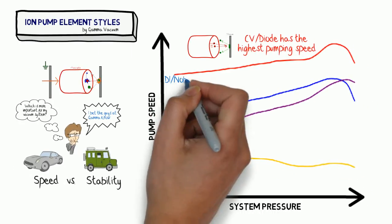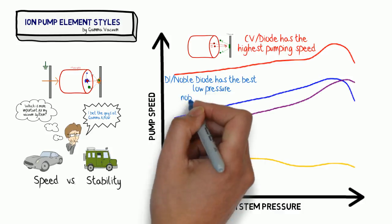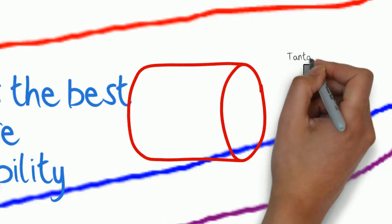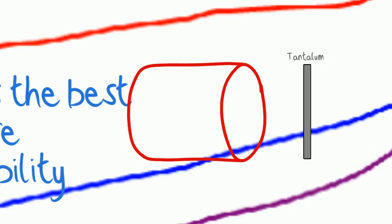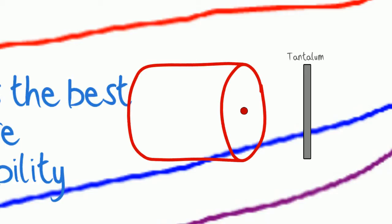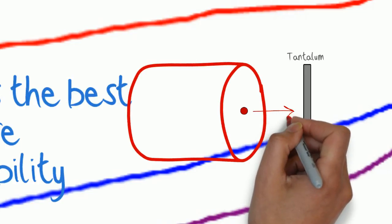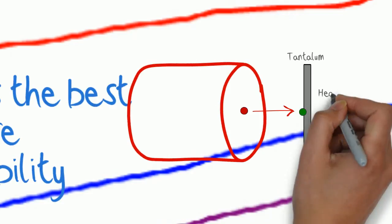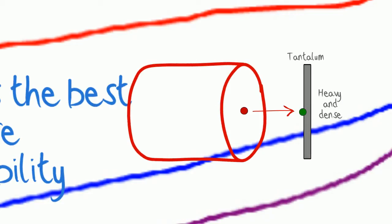The DI, on the other hand, is going to be your best low-pressure noble gas stability option. The only thing we do differently here is we, instead of using titanium, we'll use a tantalum cathode plate. So that same noble gas is going to come in, and that same noble gas is going to react with the tantalum. However, tantalum itself is heavy and dense. And instead of embedding inside that cathode material, that molecule is going to reflect as what's called a high-energy neutral.